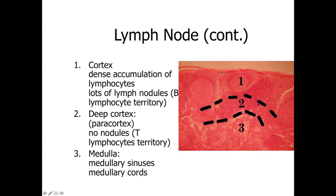Looking at the lymph node structure: we have the capsule around the outside. In the cortex, we're going to have lymph nodules — B lymphocyte territory, the cells capable of producing antibodies. We've got secondary lymph nodules with a germinal center and mantle around the outside, and lots of basophilic staining throughout the cortex. The deep cortex — sometimes called the pericortex — has no lymph nodules and is primarily T lymphocyte territory. So: B lymphocytes within the lymph nodules, T lymphocytes within the deep cortex or pericortex.